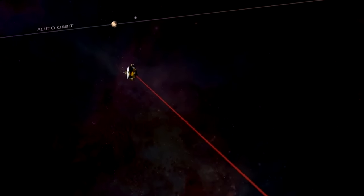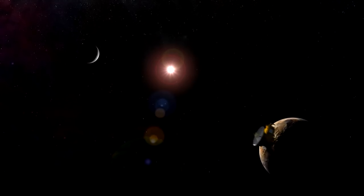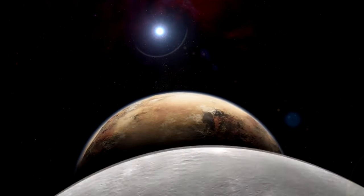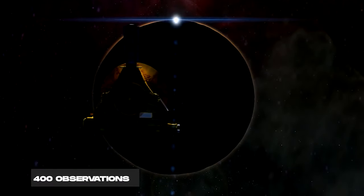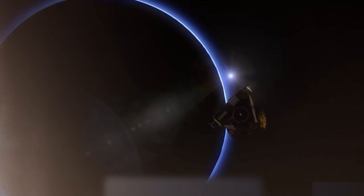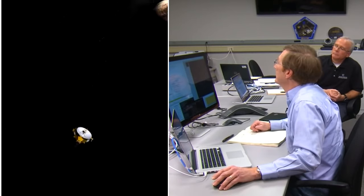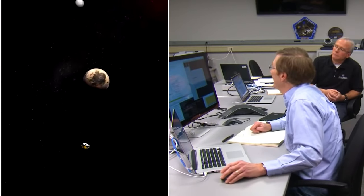However, it wasn't until 2015 that the spacecraft finally reached the primary objective of its mission, Pluto. As it soared past Pluto, the spacecraft conducted approximately 400 observations, amassing a trove of more than 6 gigabytes of invaluable data. It took over a year to transmit this substantial volume of information back to Earth.